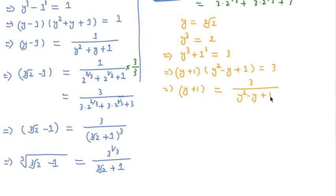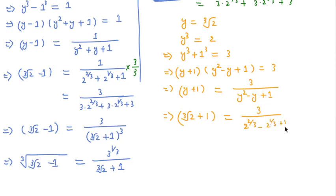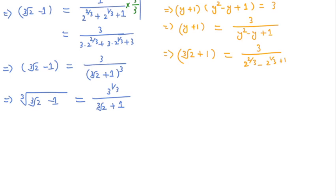This means y plus 1 equals 3 over (y² minus y plus 1). Substituting y equals cube root of 2: the square of cube root of 2 is 2^(2/3), minus 2^(1/3) plus 1. So we put this value, giving 3 over (3 to the power 1/3), and in place of the denominator expression we write this form.